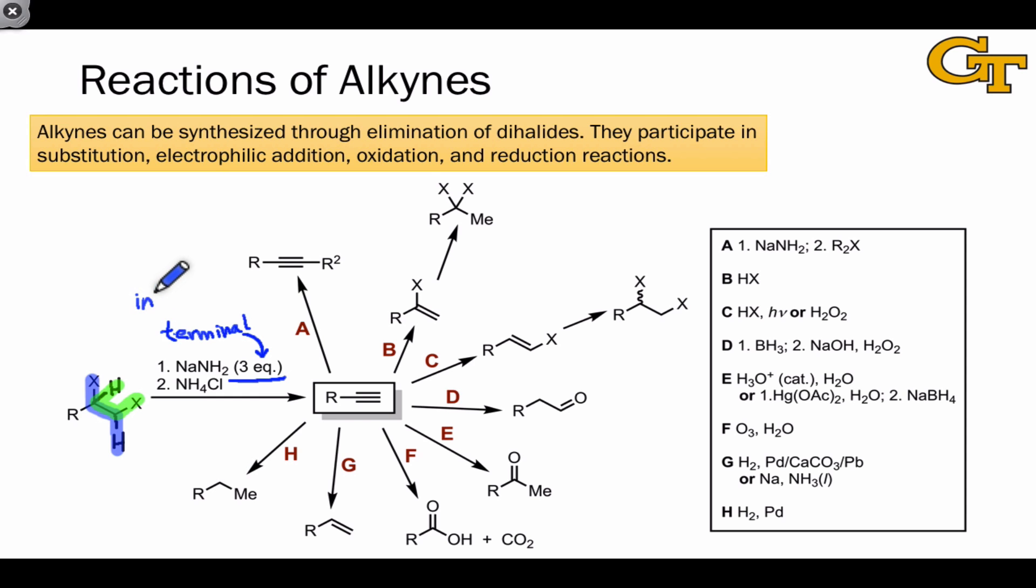Even the production of an internal alkyne through this method requires two equivalents of base to affect the two eliminations. The purpose of NH4Cl in the second step is really, you can think of it as a workup step, to protonate the acetylide anion and give the neutral terminal alkyne product.